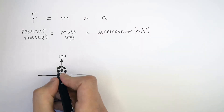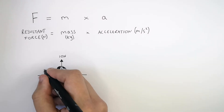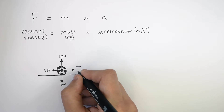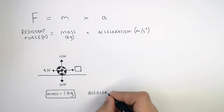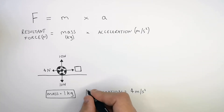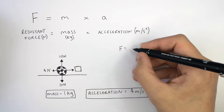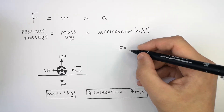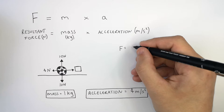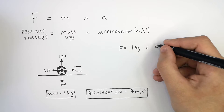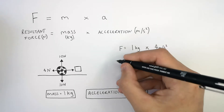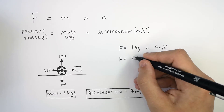In another example, the ball has been kicked to the right and has a drag force of 4 newtons. We want to work out the total force with which the ball was kicked. The mass of the ball is 1 kilogram and the acceleration is 4 meters per second squared. Using F equals MA, we substitute the numbers: F equals 1 kilogram times 4 meters per second squared, so the resultant force is 4 newtons.